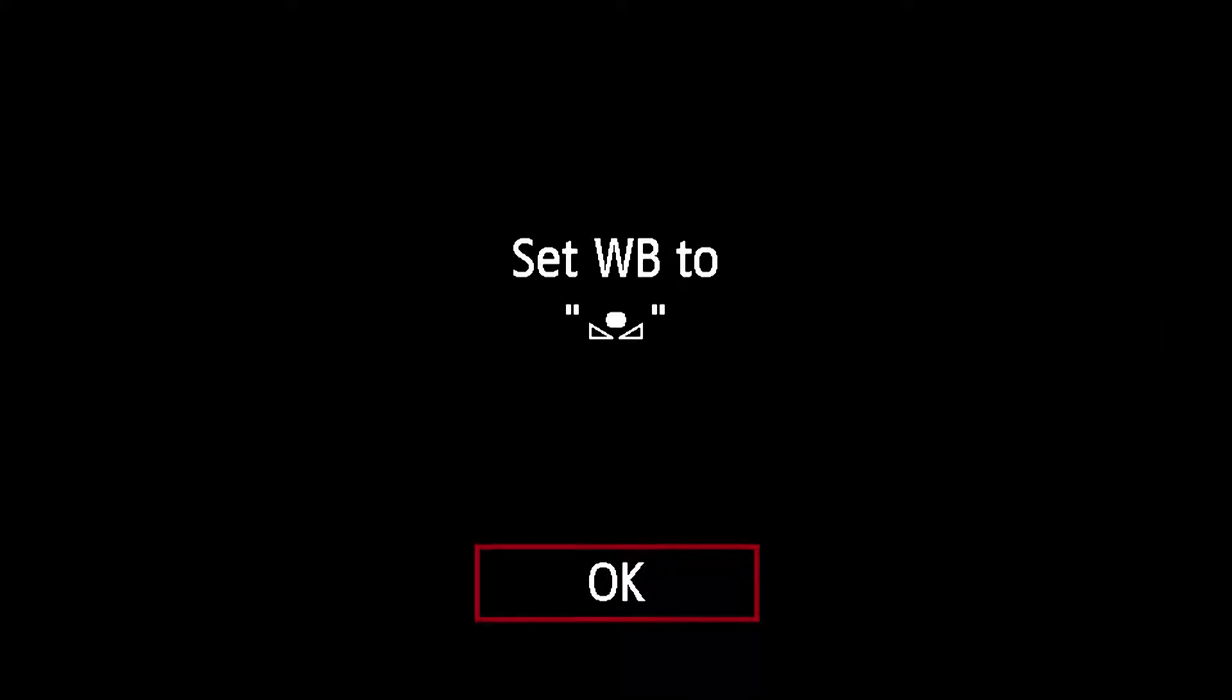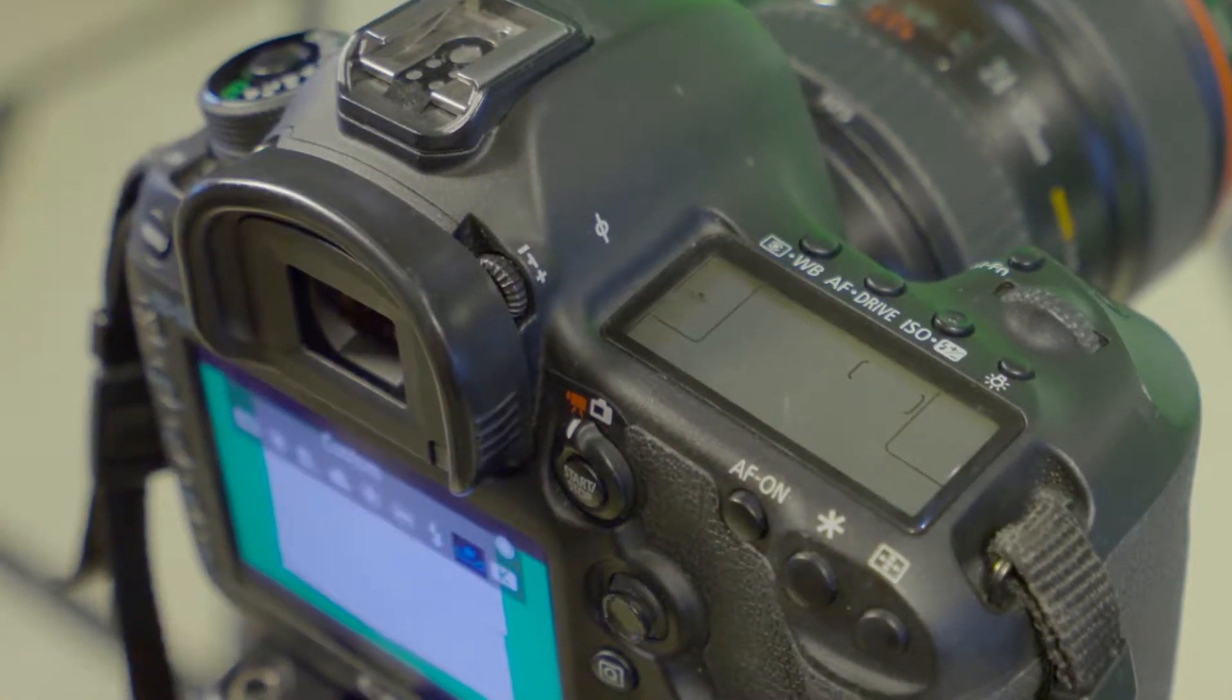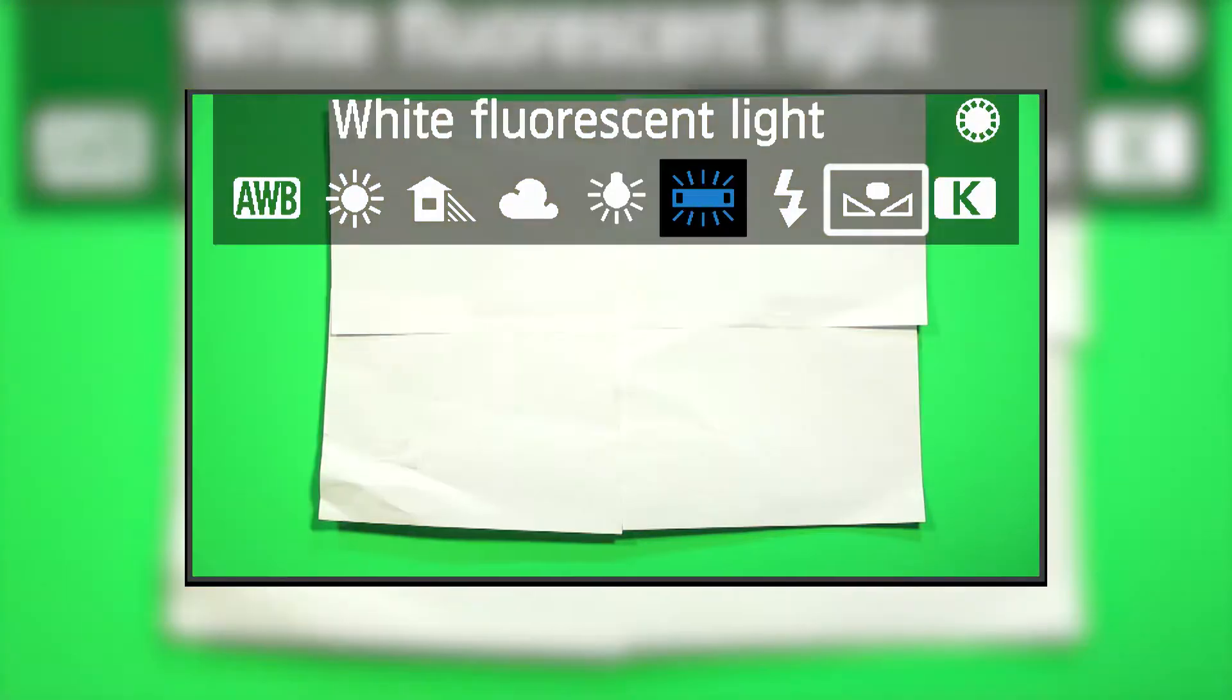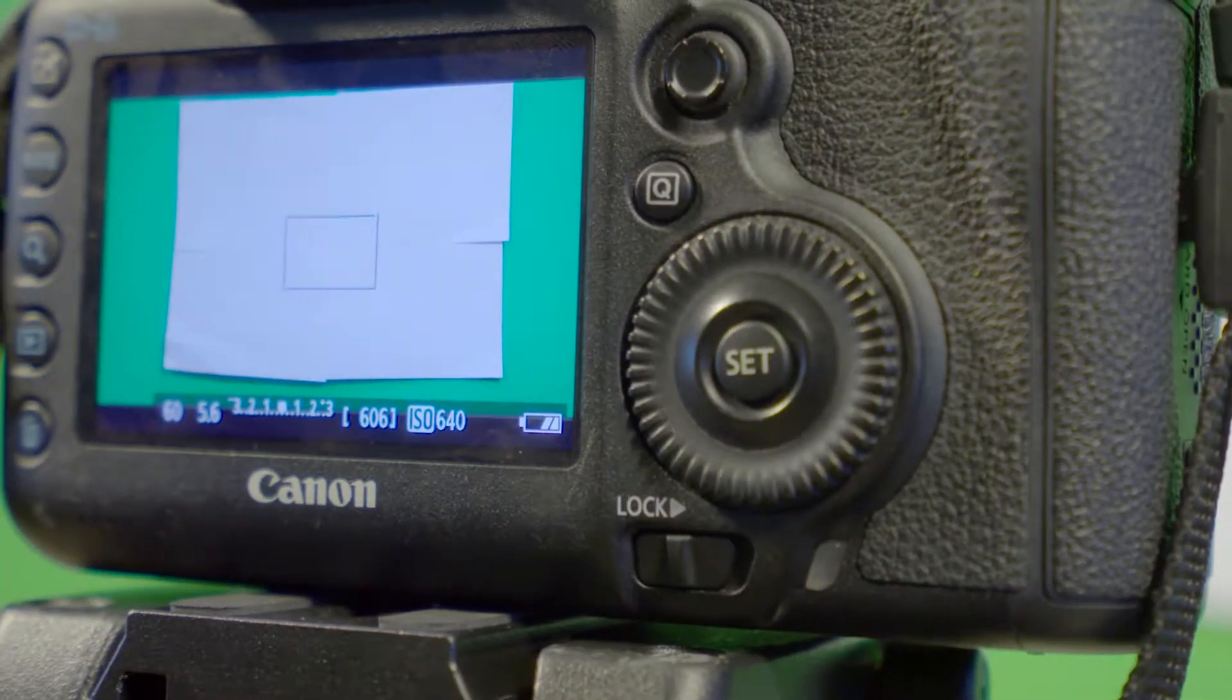Now you will have to change the white balance option on the camera. Hit the WB button which is located on the top right of the camera. Scroll over to the custom white balance option and click Set. This will set your white balance to your custom white balance from your photo you just took.